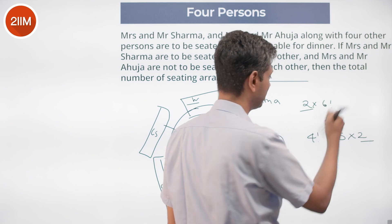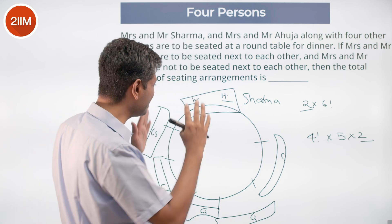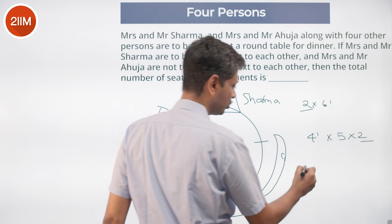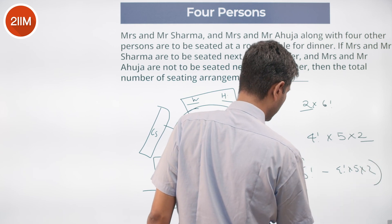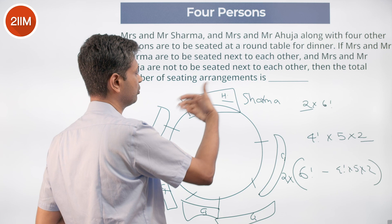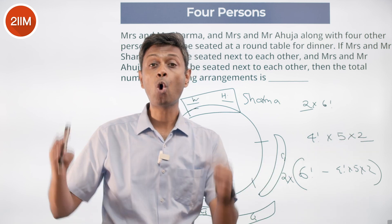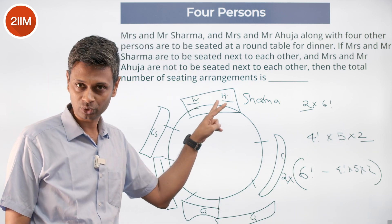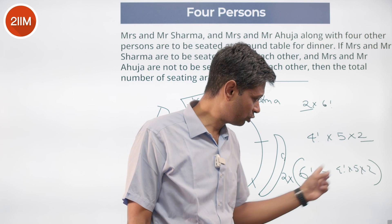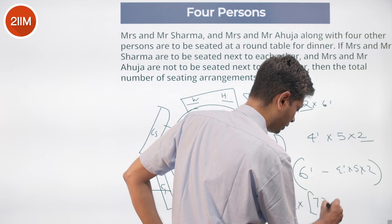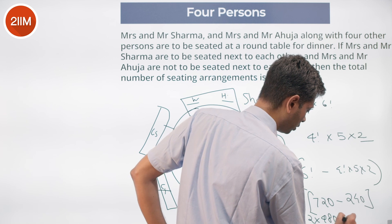So for each sequence of Sharmas — whether H-W or W-H — I have 6! arrangements, from which I subtract 4! × 5 × 2 invalid ones. The calculation: 6! minus 4! × 5 × 2 = 720 − 240 = 480. This is then multiplied by 2 for both Sharma orderings. So the answer is 2 × 480 = 960.